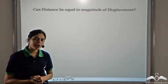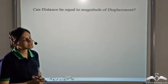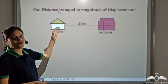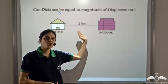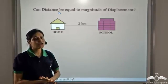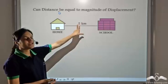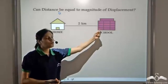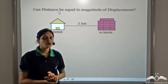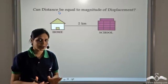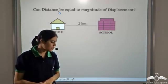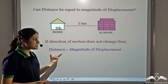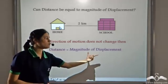Can distance ever be equal to the magnitude of displacement? Consider only the first part of the previous question: Ajay started from his home and went to his school, two kilometers east. The distance travelled is two kilometers, and the displacement is two kilometers towards east. So the magnitude of displacement equals the distance. What we conclude is: if the direction of motion does not change, then distance is equal to the magnitude of displacement.